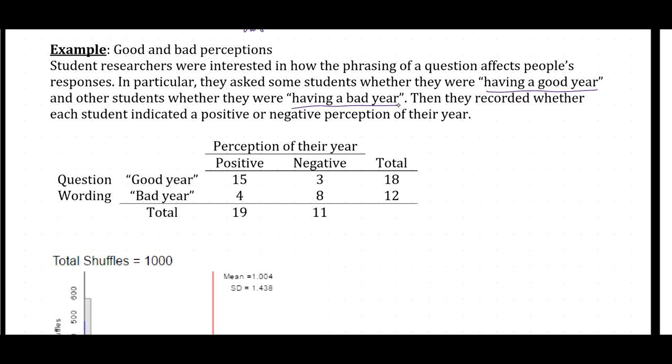The student researchers then recorded whether each participant indicated they were having a positive or negative perception of their year. Please pause this video and identify what is the explanatory variable and what is the response variable.